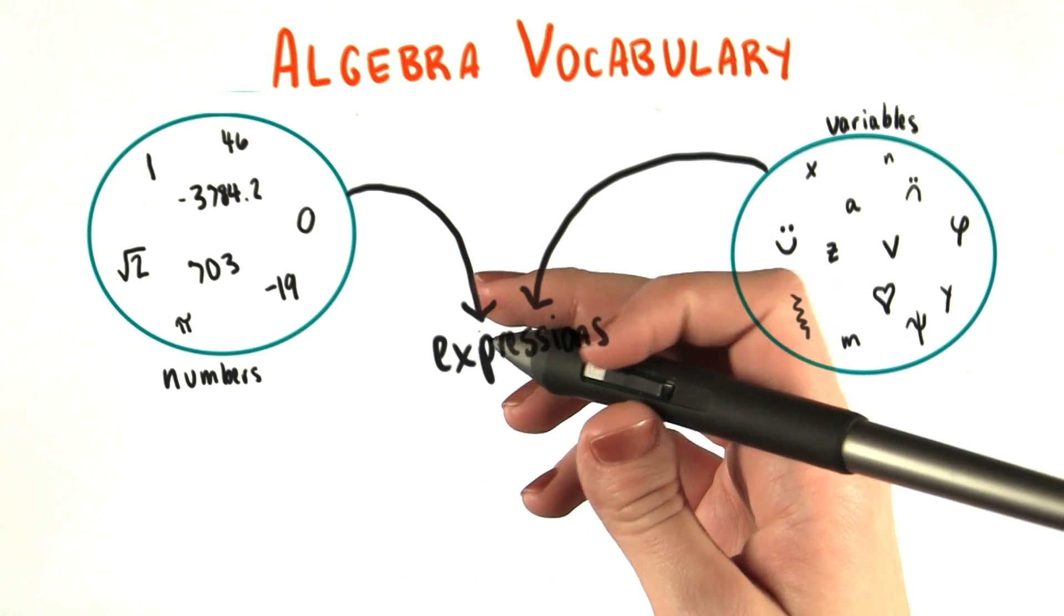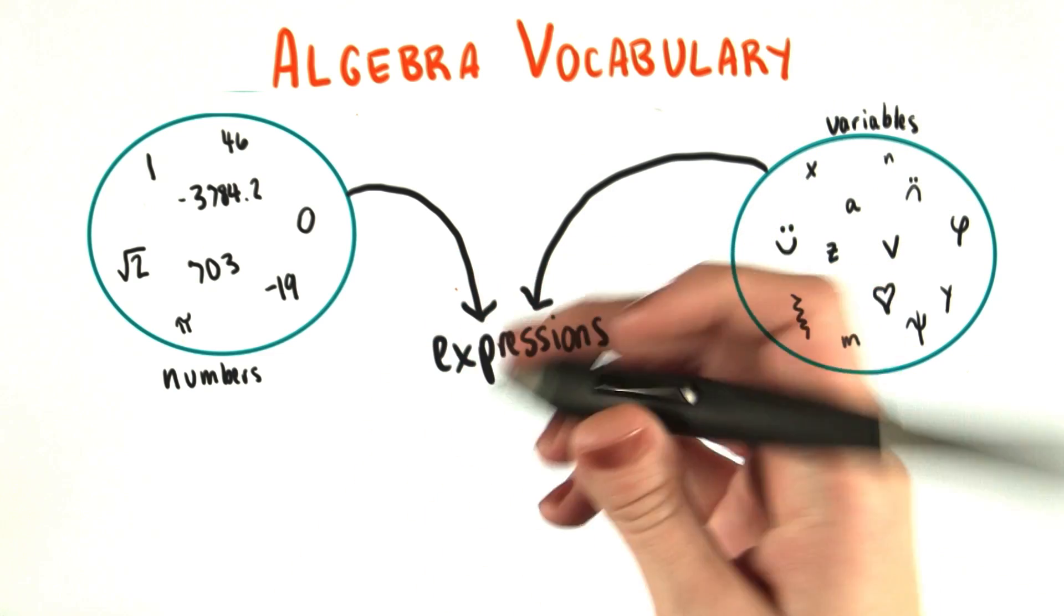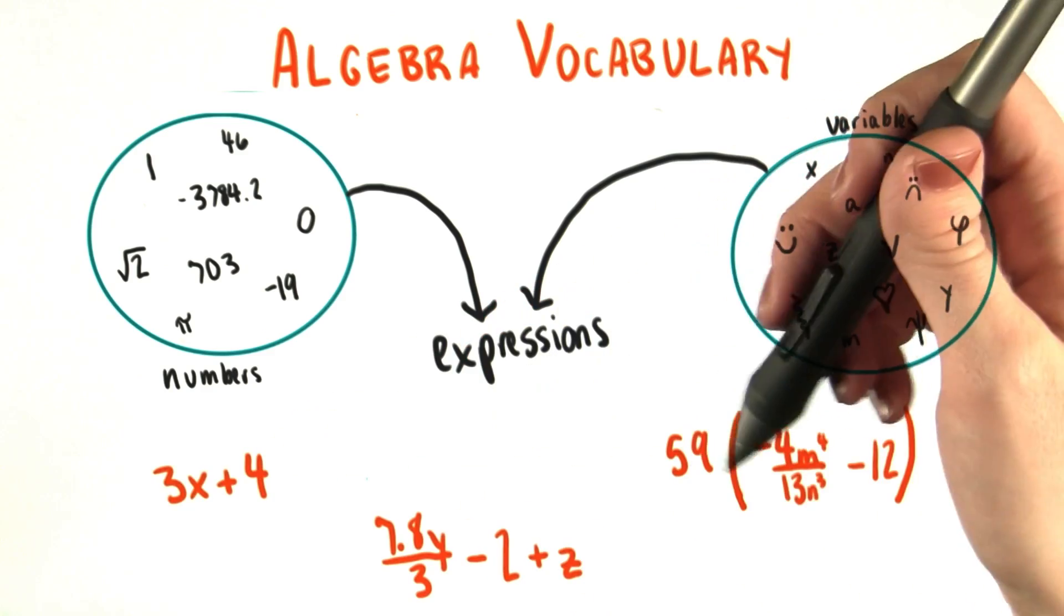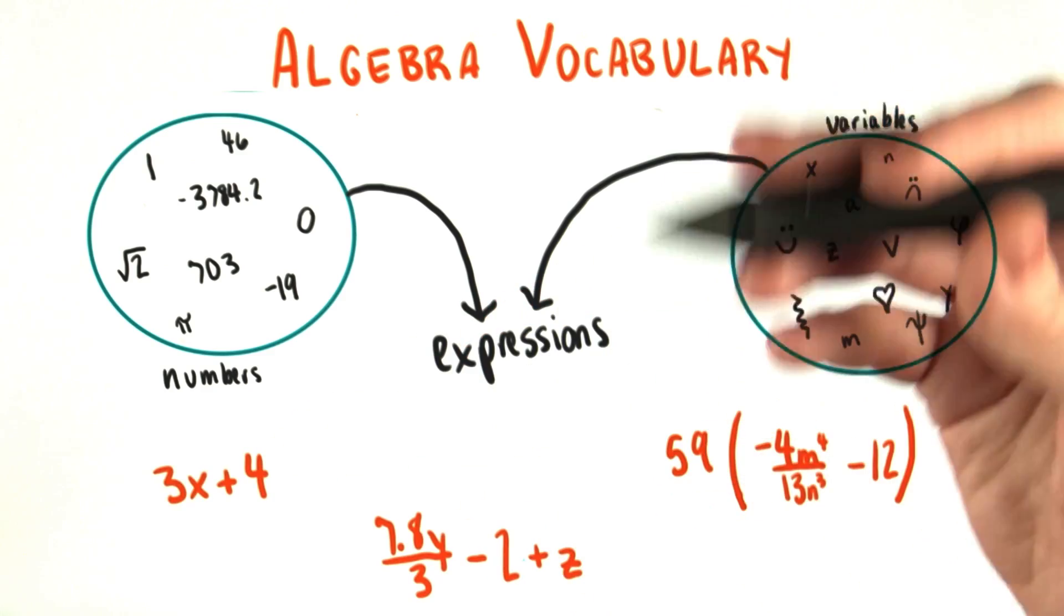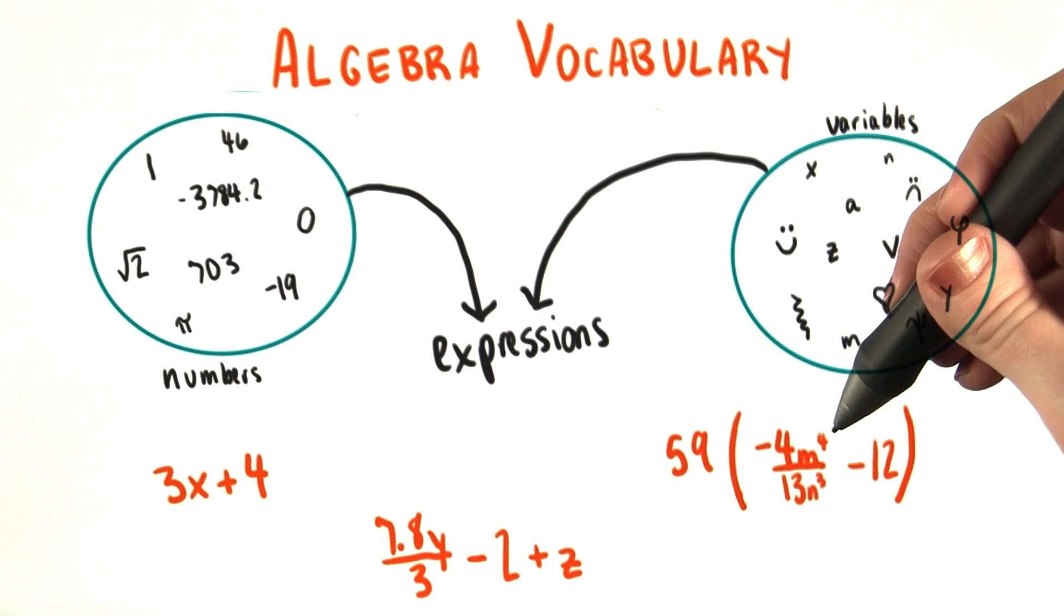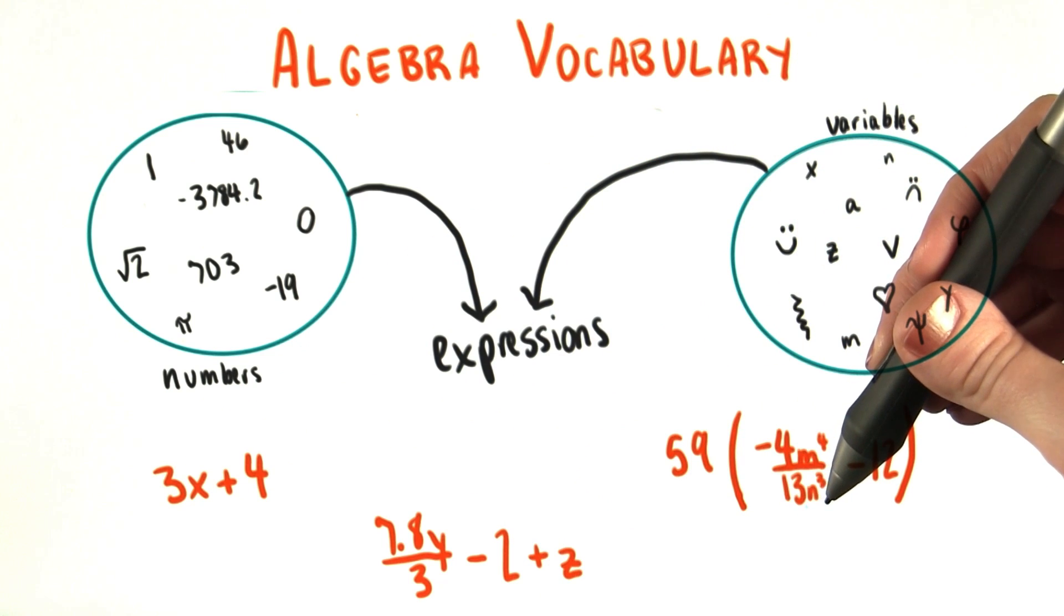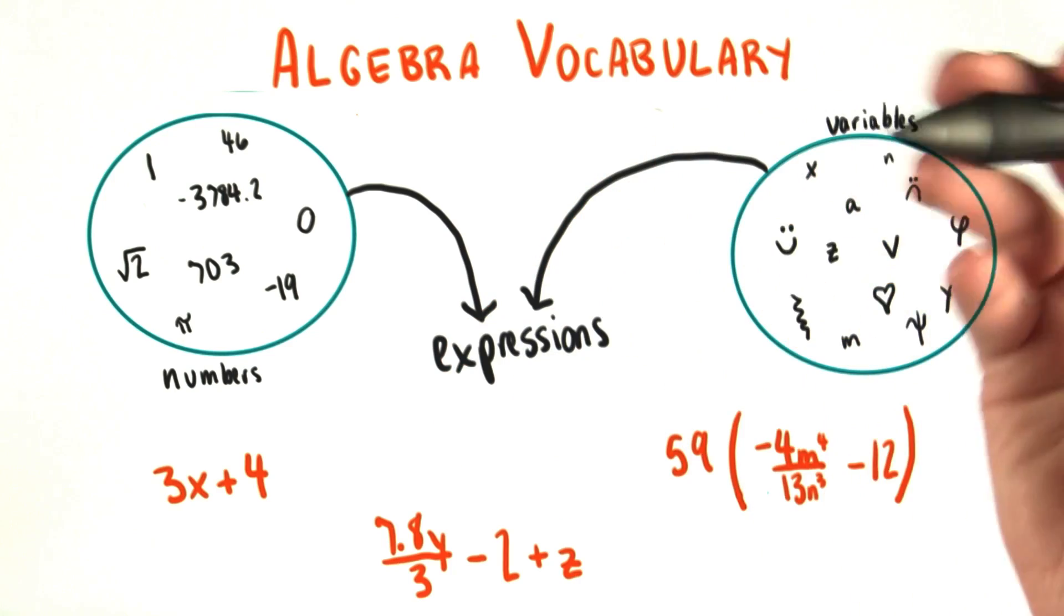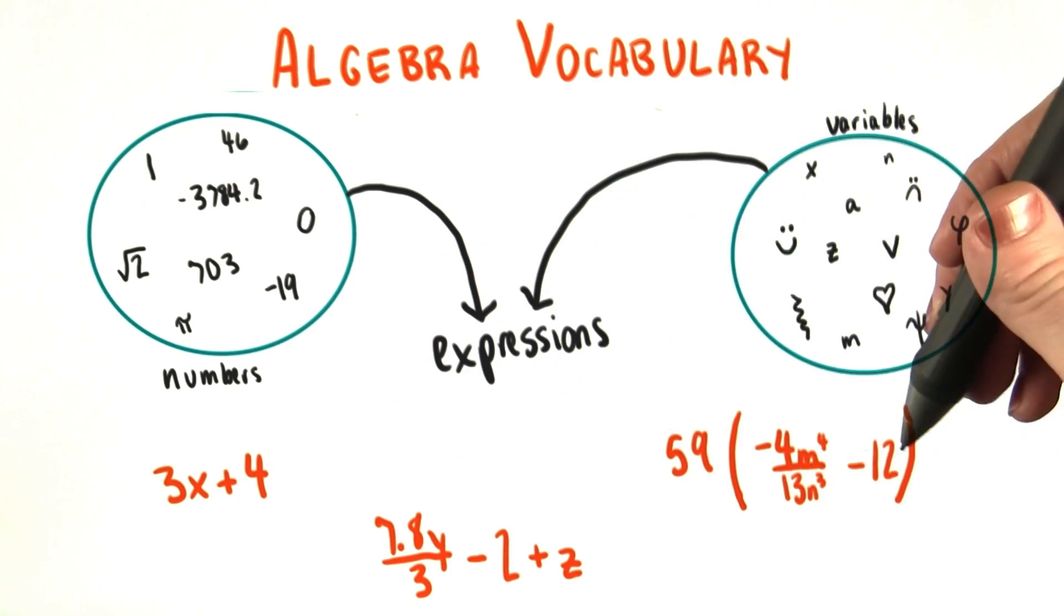To make things a little bit more concrete, I'll write out a few examples of expressions. So in each of these expressions right here, you see some terms that have variables in them, like 3x or negative 4m to the fourth over 13n cubed. And these are combined with terms that are just numbers, like 4 or negative 2.